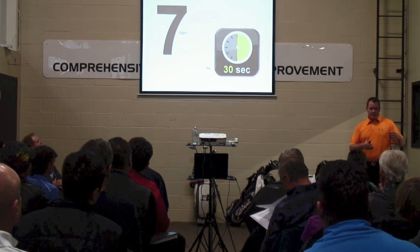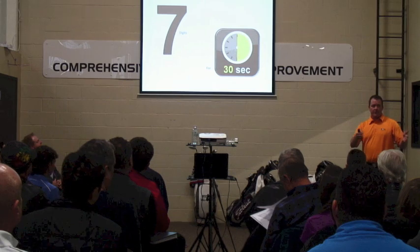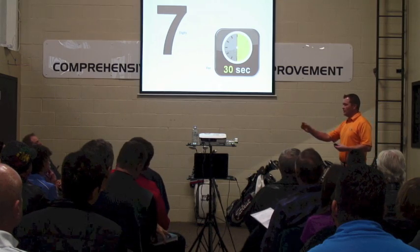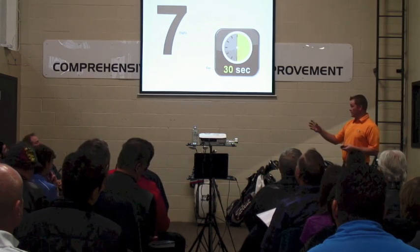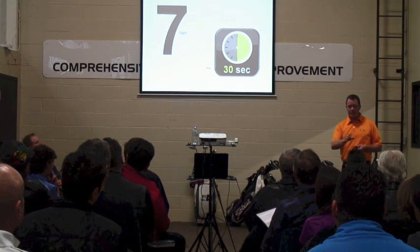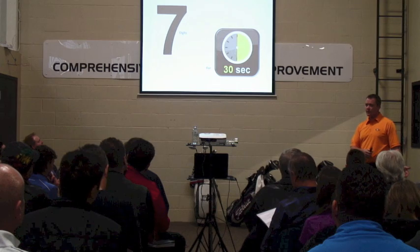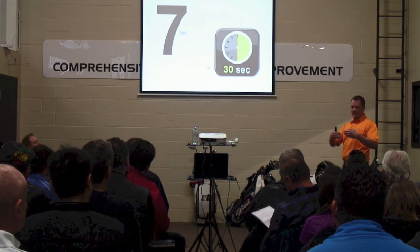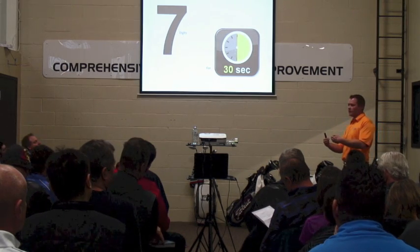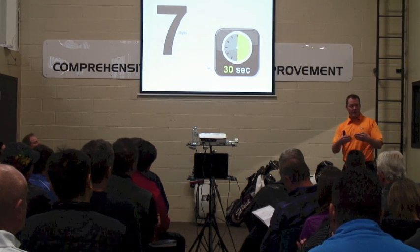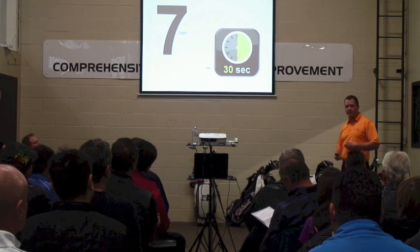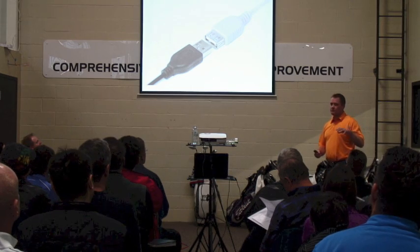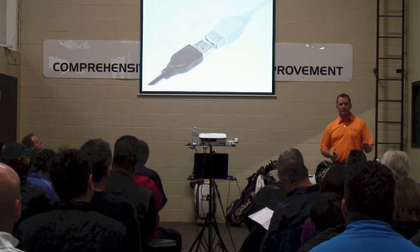The human brain can only remember seven digits for about 30 seconds within short-term memory before it becomes stored. When Laird was showing values, everything was at least two numbers — your club path was 3.4 or negative 2.1. We always like to see people have two and certainly no more than three data points presented to them at any time on a launch monitor. Anything more than that and you just can't make sense of it — you're going to induce confusion and inhibit yourself from developing new and better motor patterns.